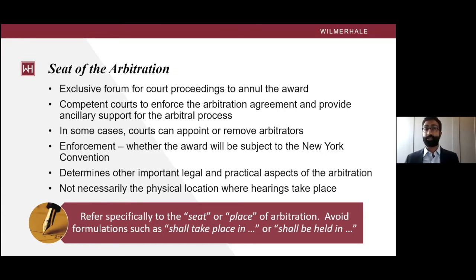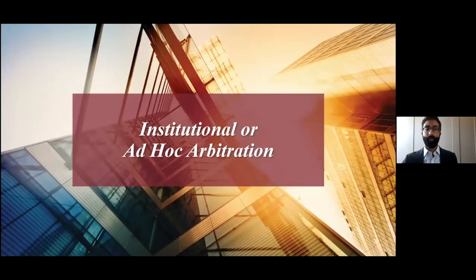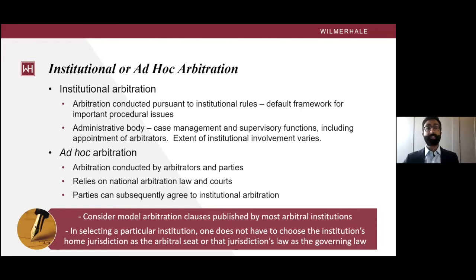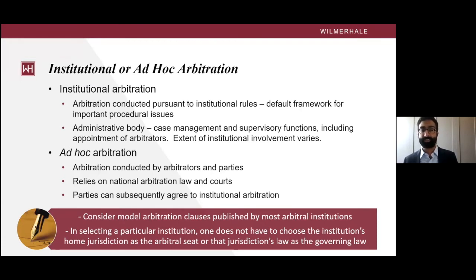You may ask what happens if the parties do not designate a seat in the arbitration agreement. Under some institutional rules, the tribunal has the authority to determine what the seat of the arbitration is after hearing the views of the parties, and there is sometimes, but not always, a presumption in favor of the institution's own home jurisdiction. Institutional arbitration is conducted pursuant to a set of rules published by an arbitral institution. There are a great number of regional and global institutions, such as the Arbitration and Mediation Court of the Caribbean, the BVI International Arbitration Center, the International Chamber of Commerce, and many others.